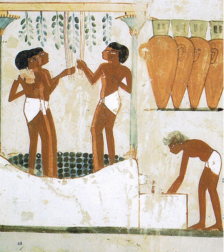Fermentation in food processing is the process of converting carbohydrates to alcohol or organic acids using microorganisms—yeasts or bacteria—under anaerobic conditions. Fermentation usually implies that the action of microorganisms is desired. The science of fermentation is known as zymology or zymergy. The term fermentation sometimes refers specifically to the chemical conversion of sugars into ethanol, producing alcoholic drinks such as wine, beer, and cider.